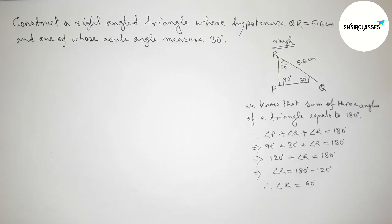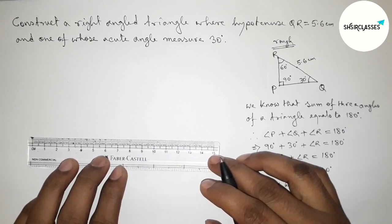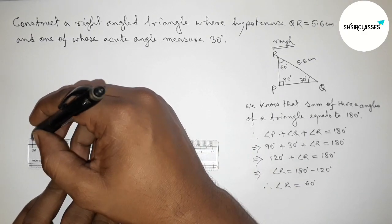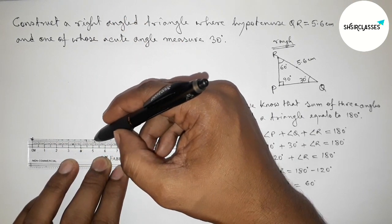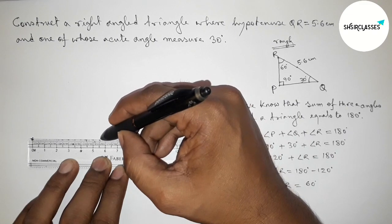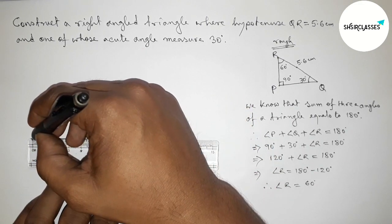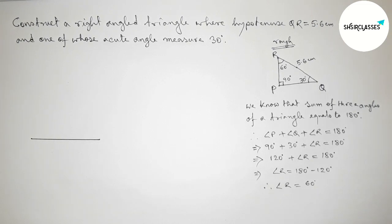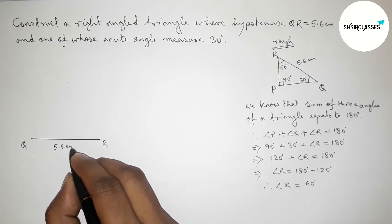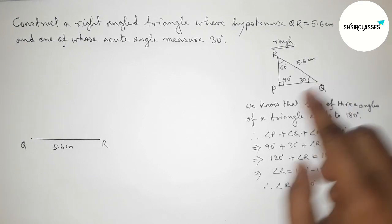Now applying this concept to construct triangle PQR. First, we draw the hypotenuse QR equals 5.6 centimeters. Starting from zero and marking up to 5.6 — this gives us the 5.6 centimeter line segment. We label the endpoints Q and R.